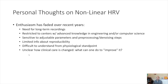Here are my personal thoughts on nonlinear heart rate variability. Enthusiasm has faded over recent years for a number of reasons. First, you need long-term recordings — for power law slope and specifically for DFA Alpha 1, at least 24 hours of data is required. The other reason is that a lot of this research has been limited to centers with advanced knowledge in engineering and computer science. Most of the major studies for DFA Alpha 1 were done in Finland, particularly by the University of Oulu and their Medical Center.